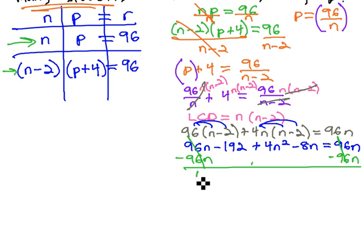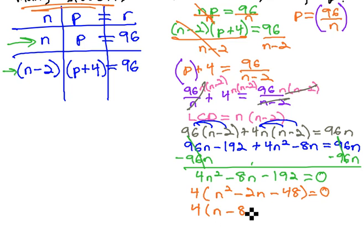Putting things in order then, we've got 4n squared minus 8n minus 192 equals 0. And we have an equation we can solve by factoring. First factor out the 4 gives us n squared minus 2n minus 48 equals 0. And 48 is 6 times 8, so we've got 4 times n minus 8 times n plus 6 equals 0.